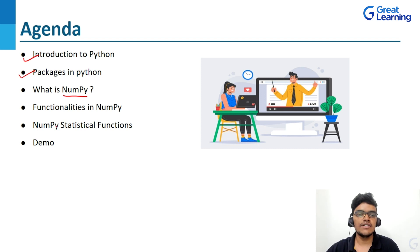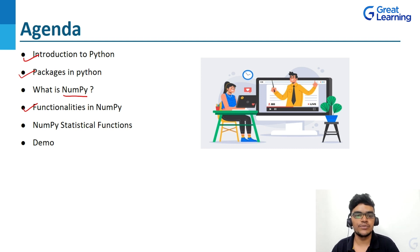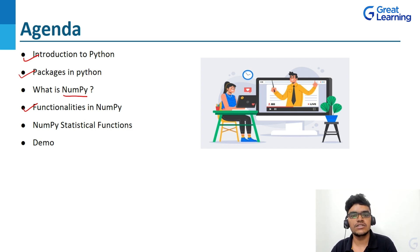After understanding NumPy, we will jump to the functionalities in NumPy. NumPy provides several functionalities such as creating an array, doing indexing and slicing, and many more. Next, we have NumPy statistical functions. NumPy provides several statistical functions such as amin and amax. Also, using NumPy you can calculate variance as well as standard deviation. We'll see all the statistical functions in Python programming.